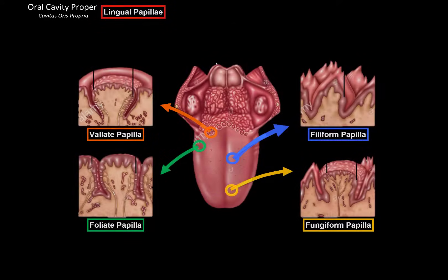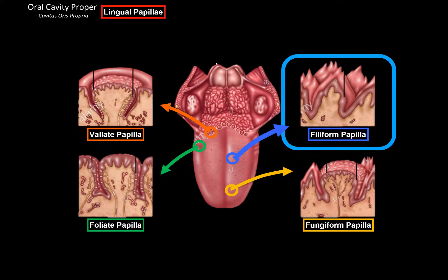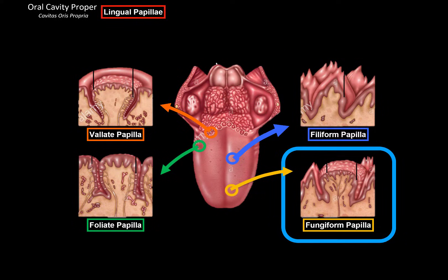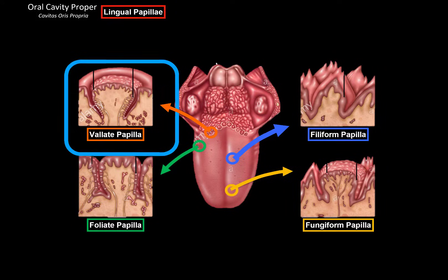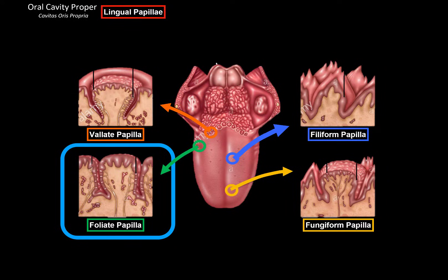On the surface of the tongue, we have lingual papillae, which contain taste buds to sense taste. Different parts of the tongue sense different tastes because different taste buds are located at several positions. First, filiform papillae give the tongue its roughness because they contain a thick layer of epithelial tissue. Next, fungiform papillae are small elevations that carry taste receptor buds. Then there are vallate papillae located near the terminal sulcus, which also contain taste buds. Finally, foliate papillae also contain taste buds and are located on the lateral regions of the tongue.